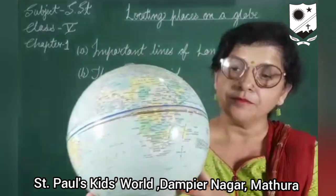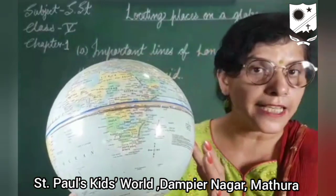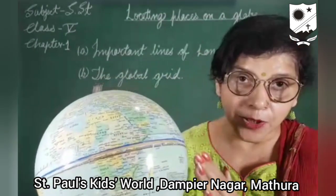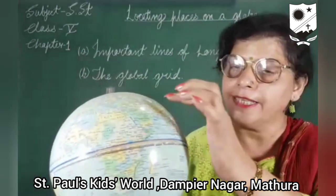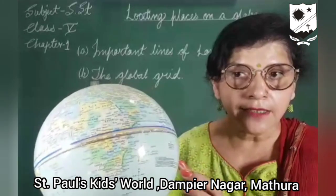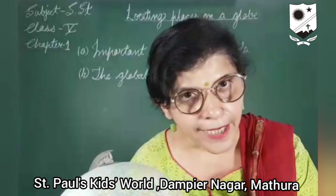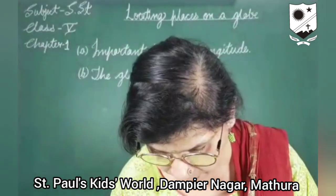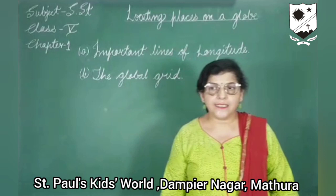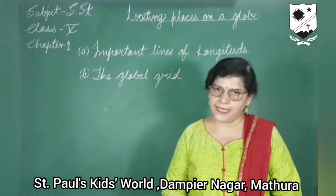See, these lines are intersecting each other. When latitudes and longitudes intersect each other, they form what is known as the Global Grid. The Global Grid is used to give the exact location of a place.